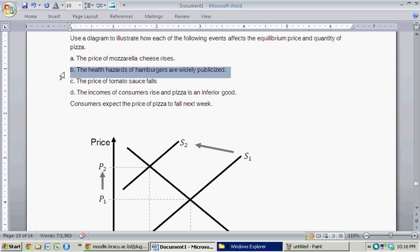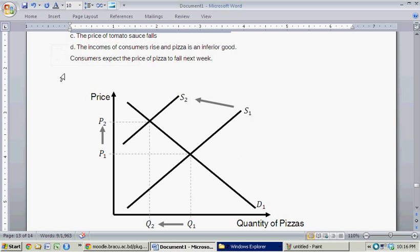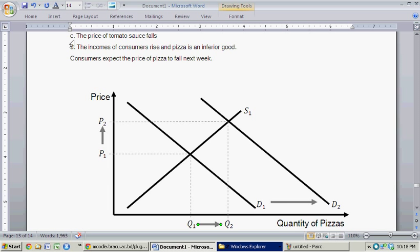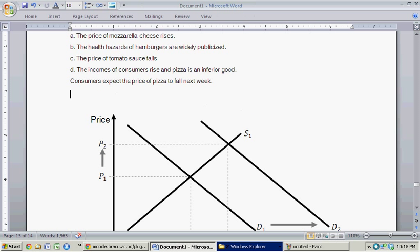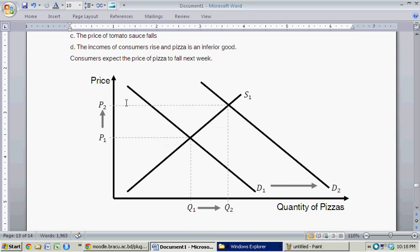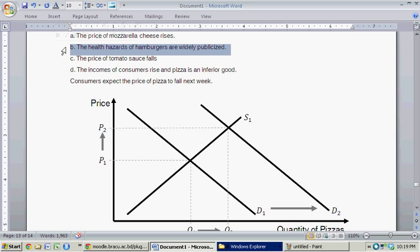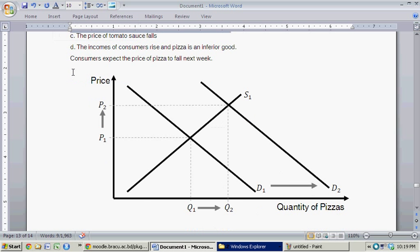Moving on to Part B. The health hazards of hamburgers are widely publicized. So hamburgers and pizza, you can think of as substitutes. So if for some reason people wanted fewer hamburgers, in this case because the health hazards of them were widely publicized, that implies people are going to be shifting towards the purchase of pizzas.